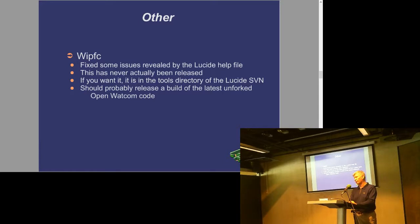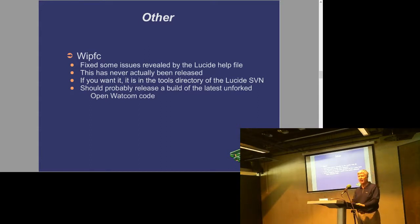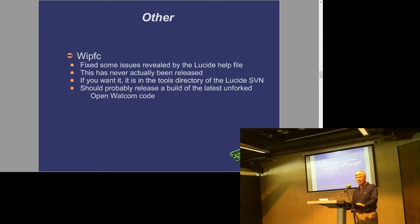The help file compiler in OpenWATCOM is actually working and is out there, though it's never been released to anybody. The only version with all the new fixes is up on the Lucid SVN — so if anybody needs that compiler, just go out there and grab it off the SVN for Lucid. I promised someone about six months ago that I would compile the latest code for OpenWATCOM and put it up on Hobbs. I haven't done that yet, but I will attempt to do that in the relatively short term so other people have access to the newest code.